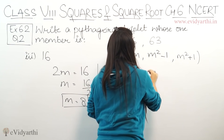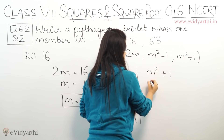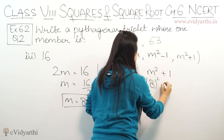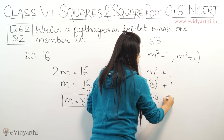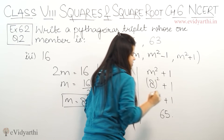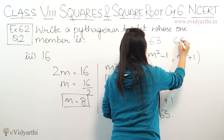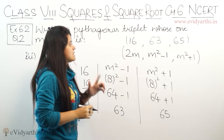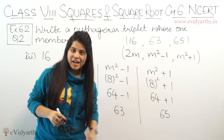Now the third number is m² + 1. So 8² + 1, which is 64 + 1, equals 65. So the third number is 65. The Pythagoras triplet we have is 16, 63, and 65.